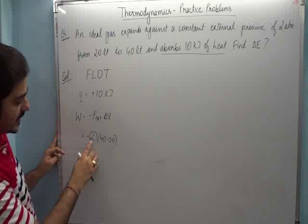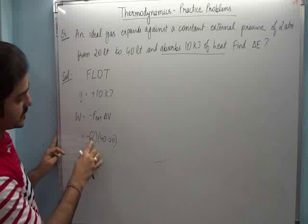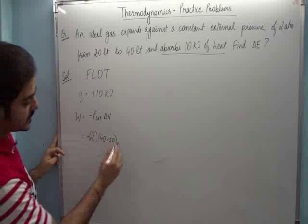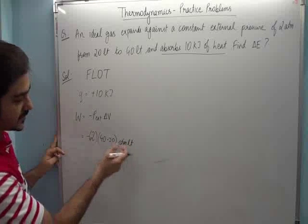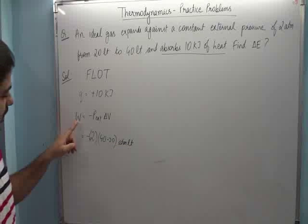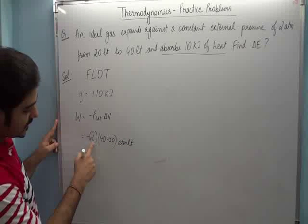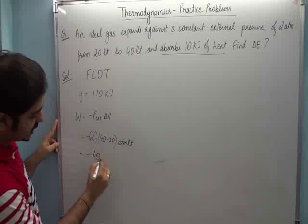Right now it's 2 in atmospheres and 40 and 20 in liters, so the result is in liter-atmospheres. So far, using the formula, minus 2 into 20 gives you minus 40 liter-atmospheres.